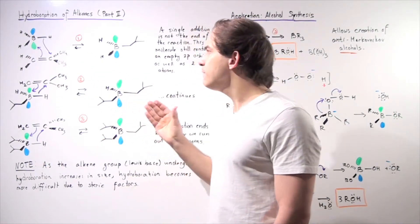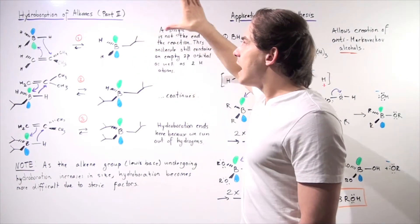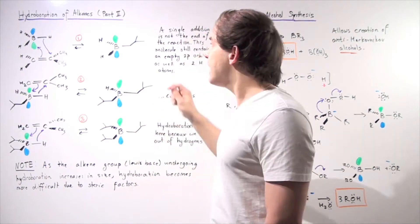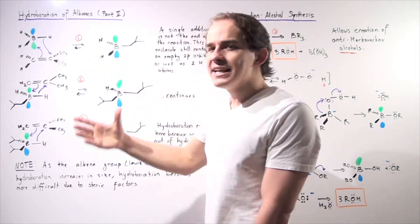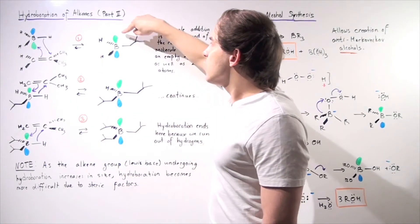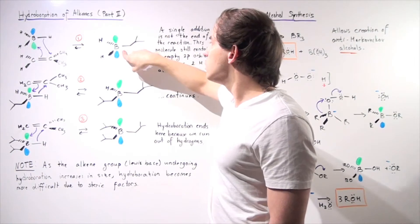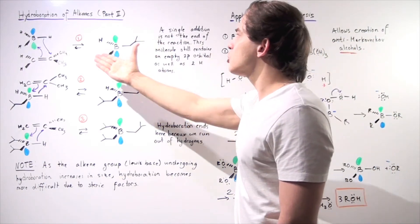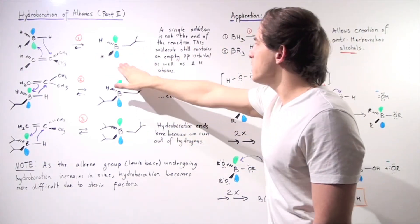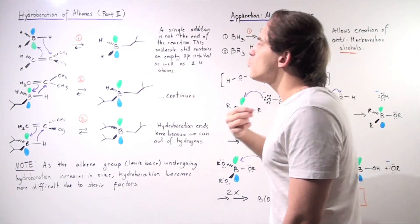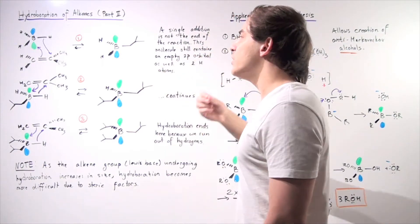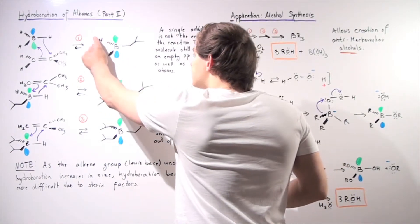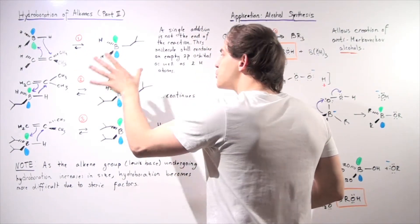In a one-step mechanism, we form the initial product. However, this is not the end of hydroboration, because we still have two more H atoms that can potentially react in the same way, as well as the empty 2p orbital of the boron. A single addition is not the end — this molecule still contains an empty 2p orbital and two H atoms that can react in the same manner, so two more hydroboration reactions can take place.